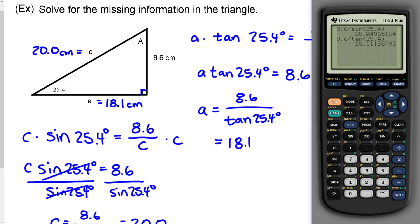The last missing piece is the angle in the top corner. That's easy to find because I already know two angles: 90 degrees and 25.4 degrees. I can do 90 minus 25.4, which gives 64.6 degrees. Now I have all the information for the triangle — the triangle is solved.